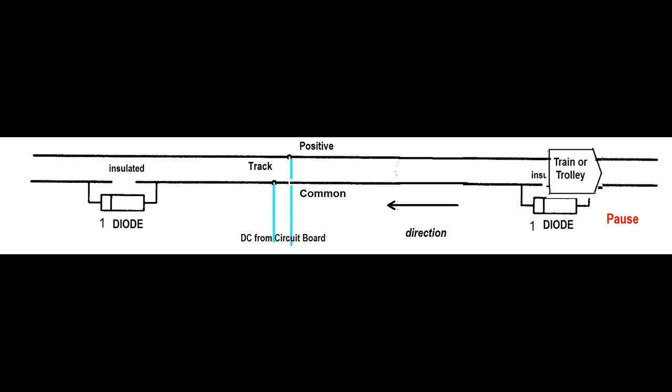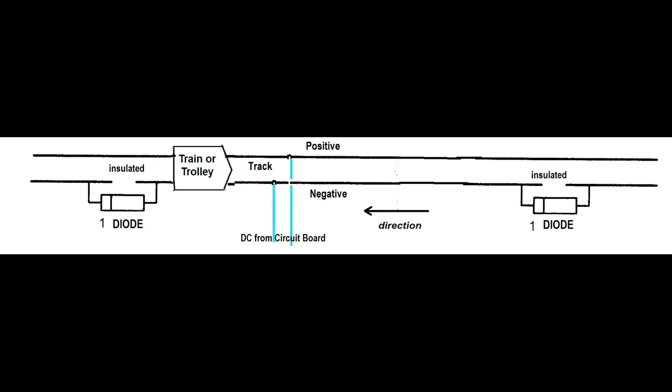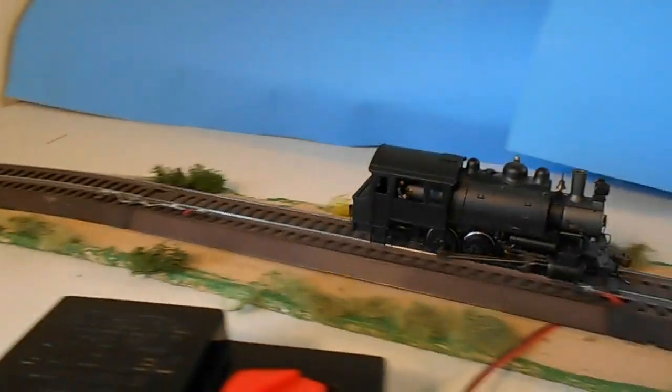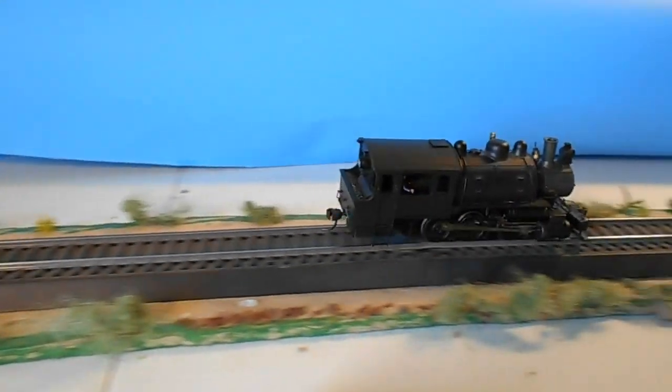After a slight pause, which can be varied from a few seconds to several minutes, the relay activates to reverse the current flow. The train or trolley proceeds to the opposite end. The sequence repeats automatically until the controller is turned off.